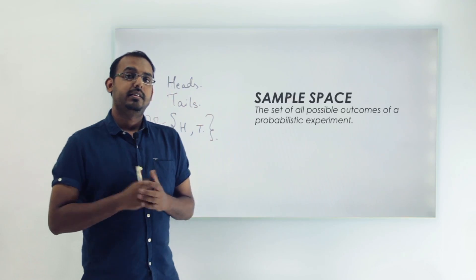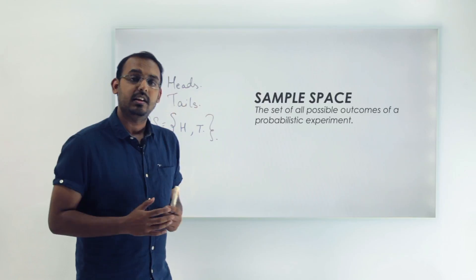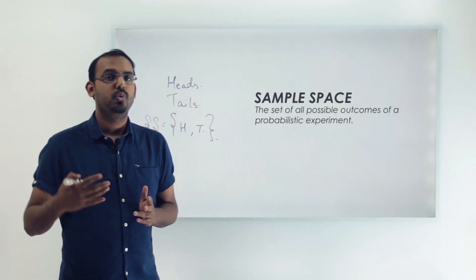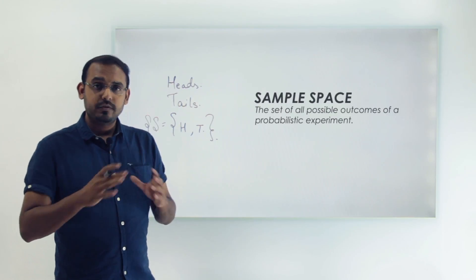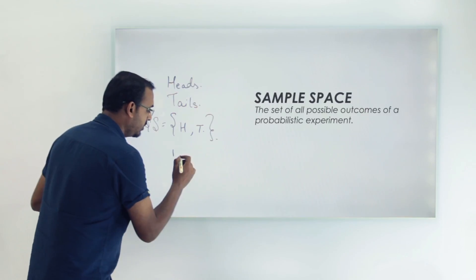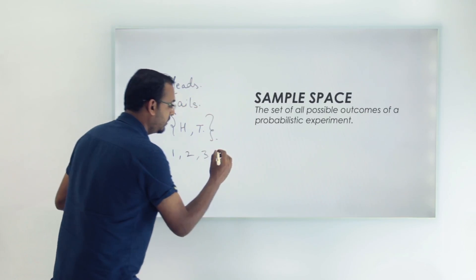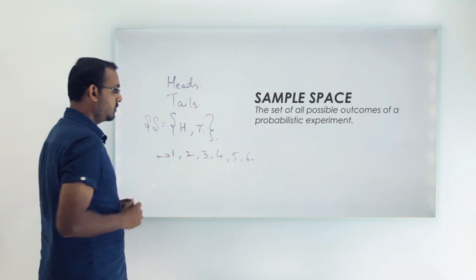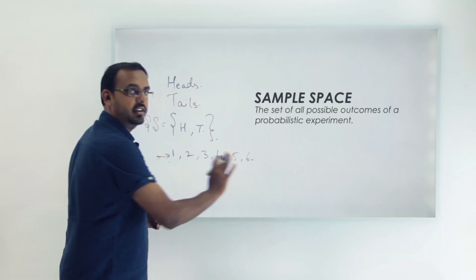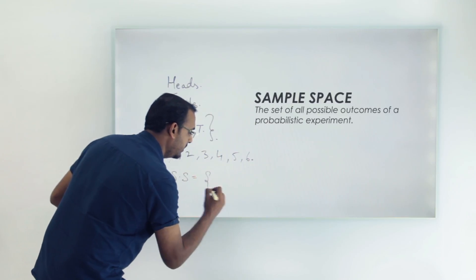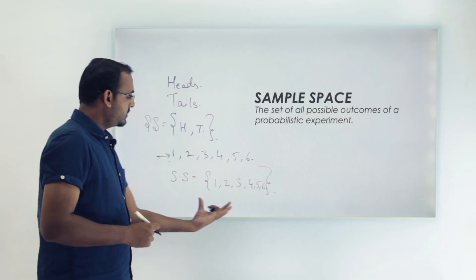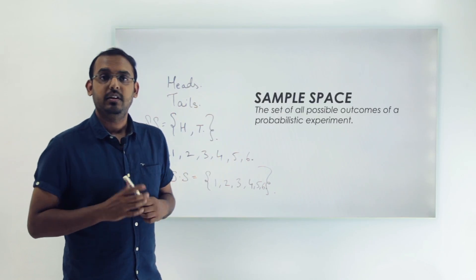Let's take another example — rolling a dice once. A dice has the numbers 1 to 6 on its faces, so I will get one of these six numbers. The possible outcomes are 1, 2, 3, 4, 5, or 6. So the sample space for rolling a dice once is the set {1, 2, 3, 4, 5, 6}.